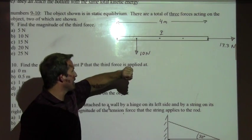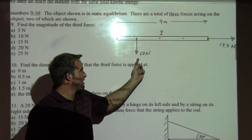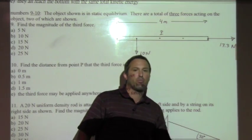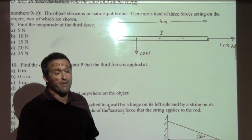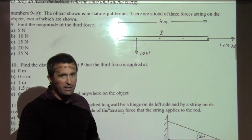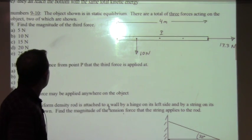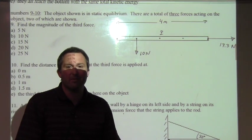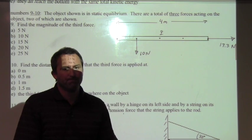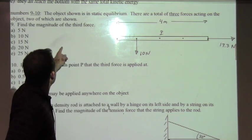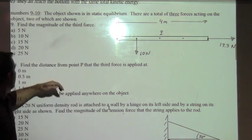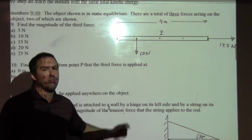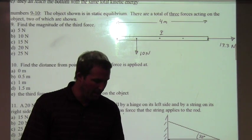There's a couple of questions here. Here's the object, 4 meters long. Two of the forces are shown here: a 10 Newton force and a 17.3 Newton force. It says there are three forces acting on the object. We need to figure out everything we can about the third force. We want to find the magnitude of the third force and the distance from point P where that third force needs to be applied.